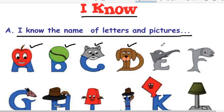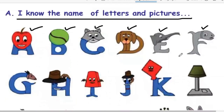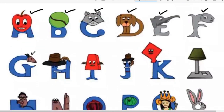E for elephant. F for fish. G for goat. H for hat. I for ice cream. J for joker.